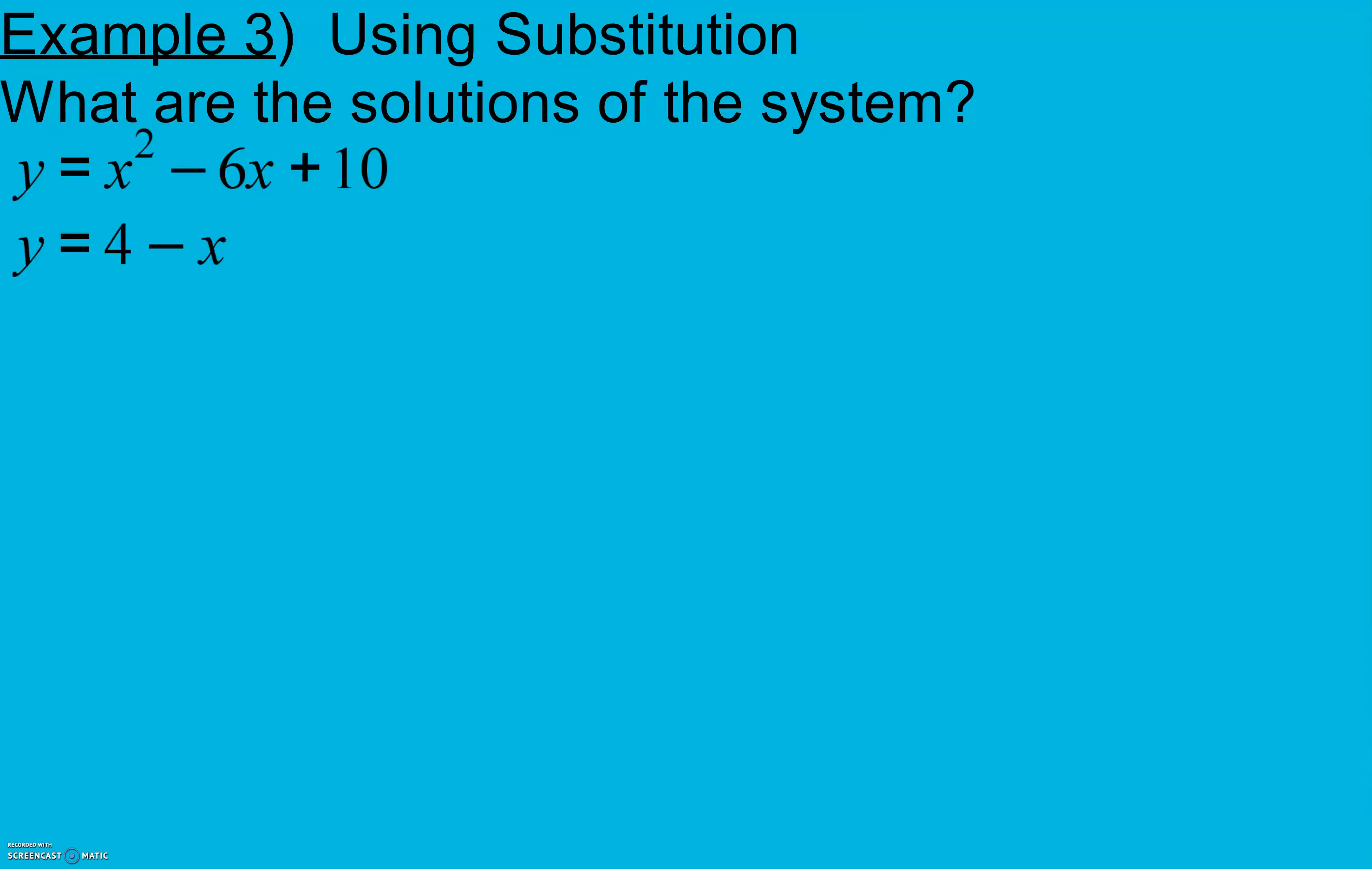Continuing on in section 9.8 with example 3, we're going to use substitution to solve this system. Here we know that y equals 4 minus x. So I'm going to take that and substitute it into my other equation. Instead of y, I'm going to write what it equals, 4 minus x, and leave the rest of my equation completely unchanged.